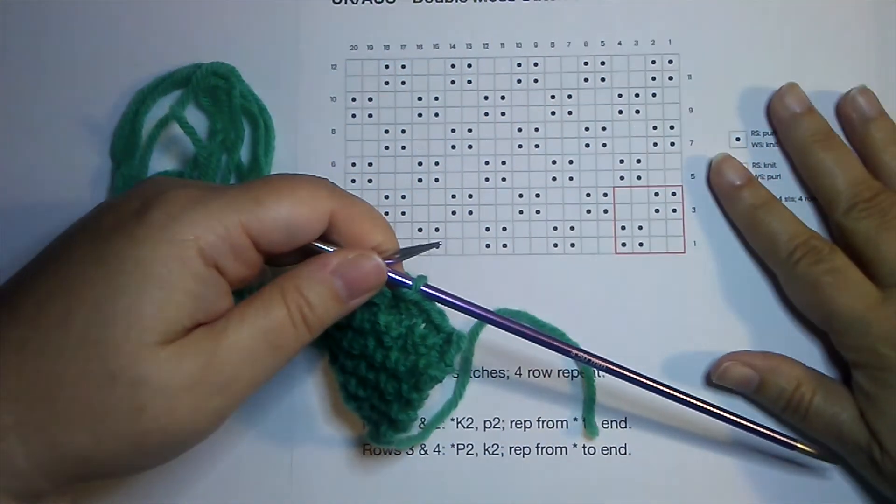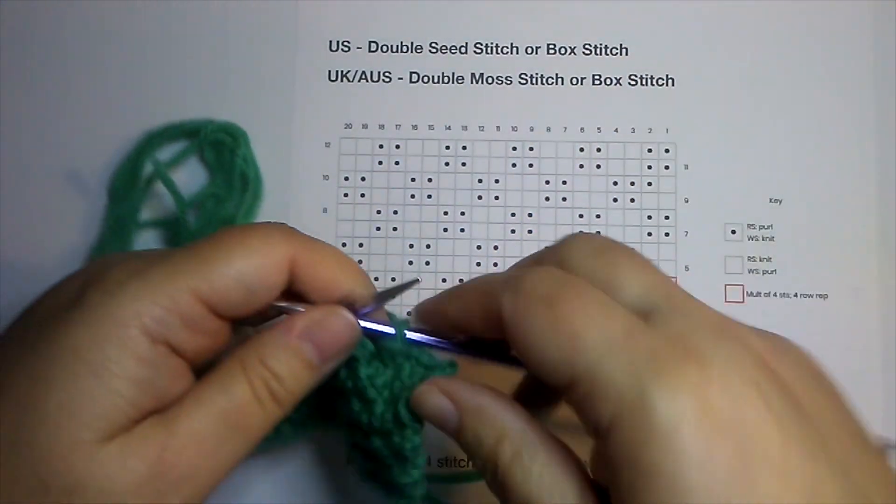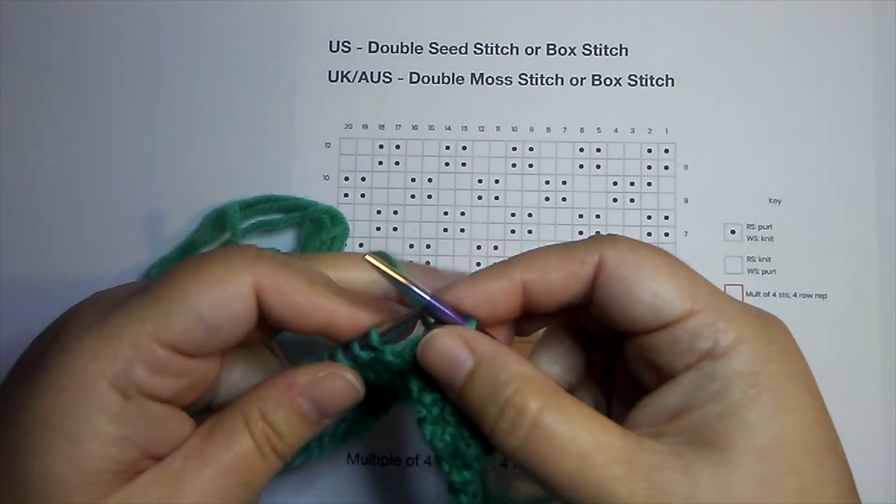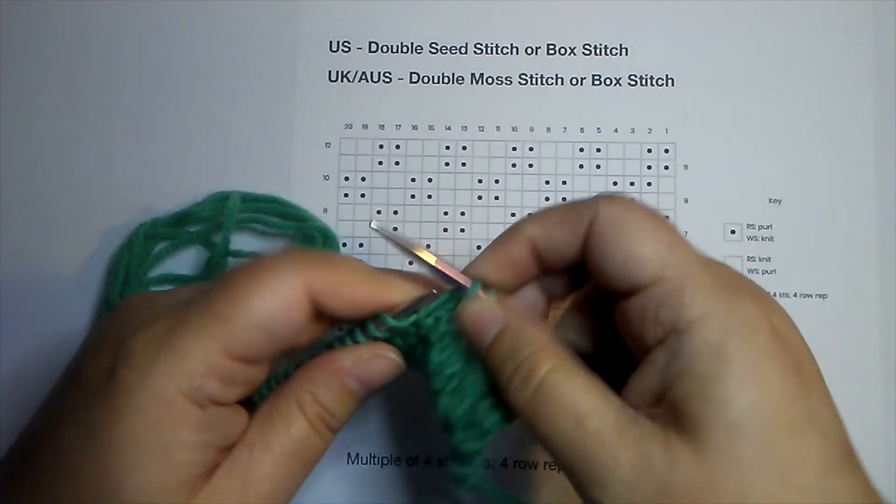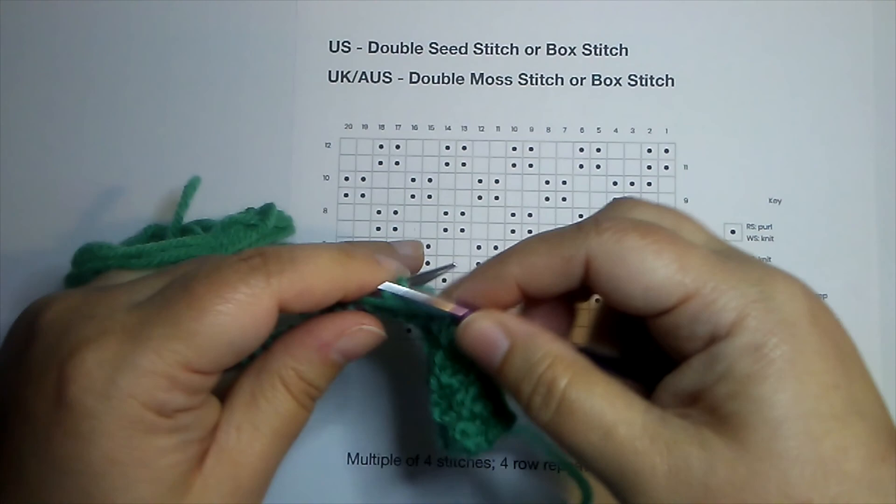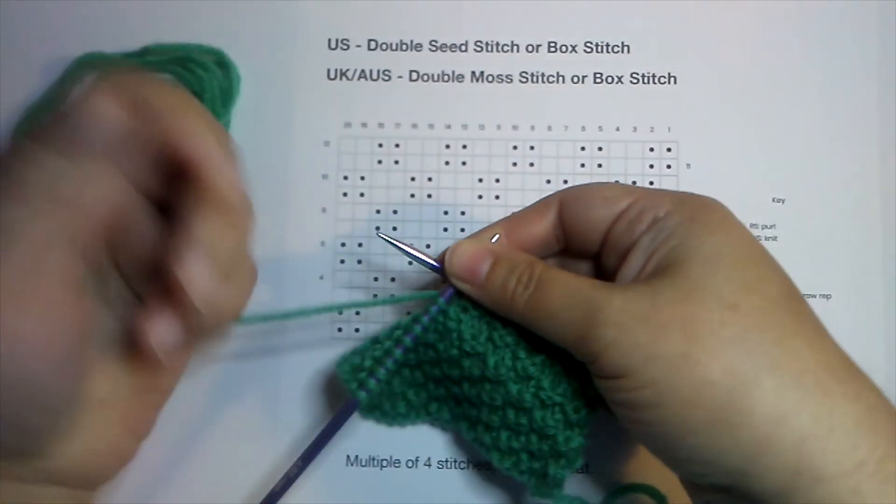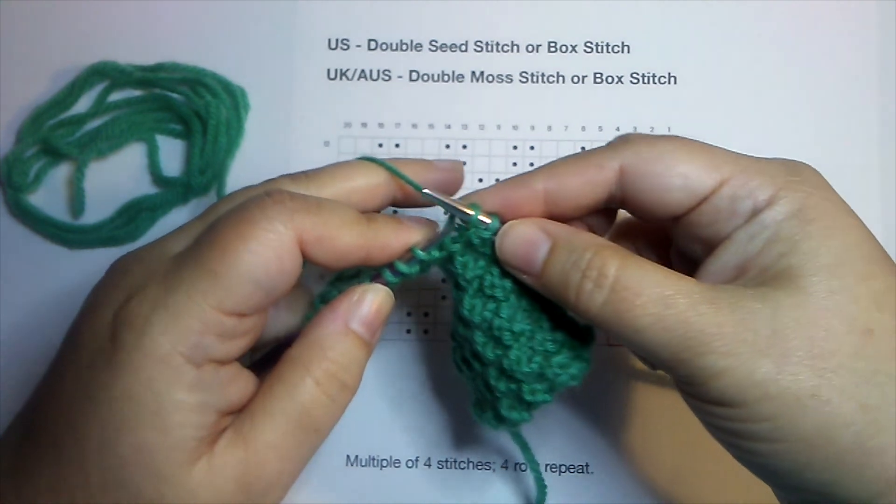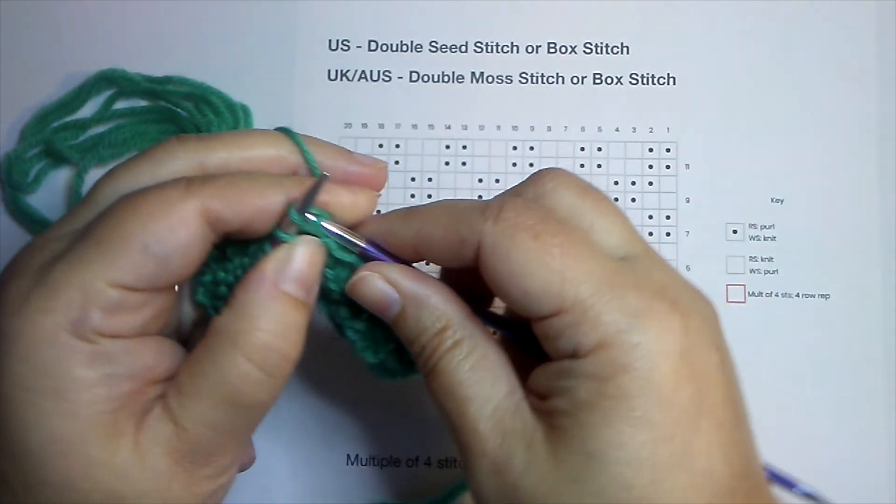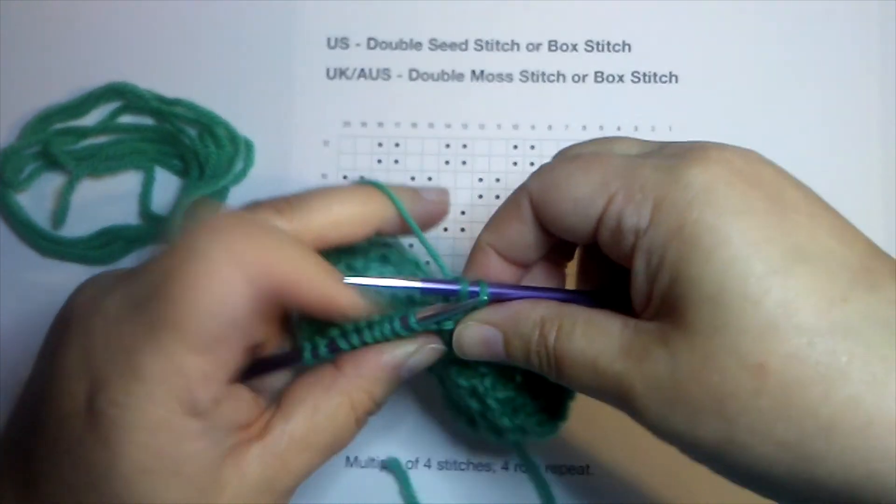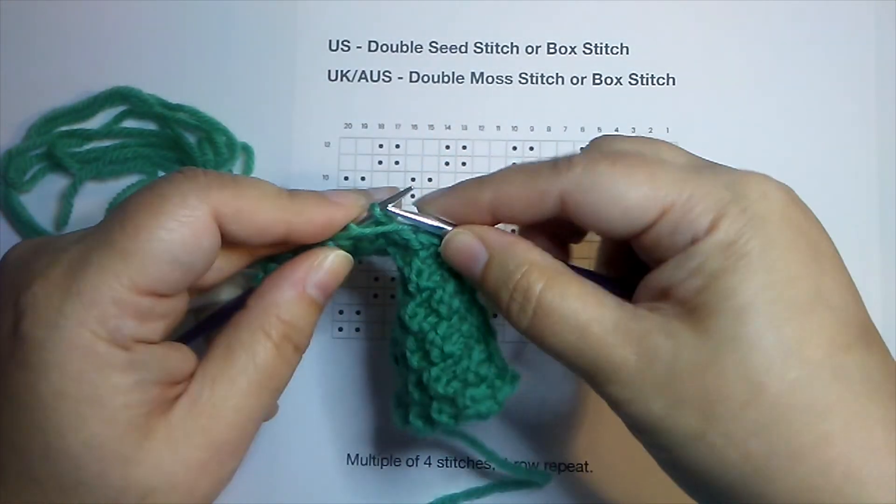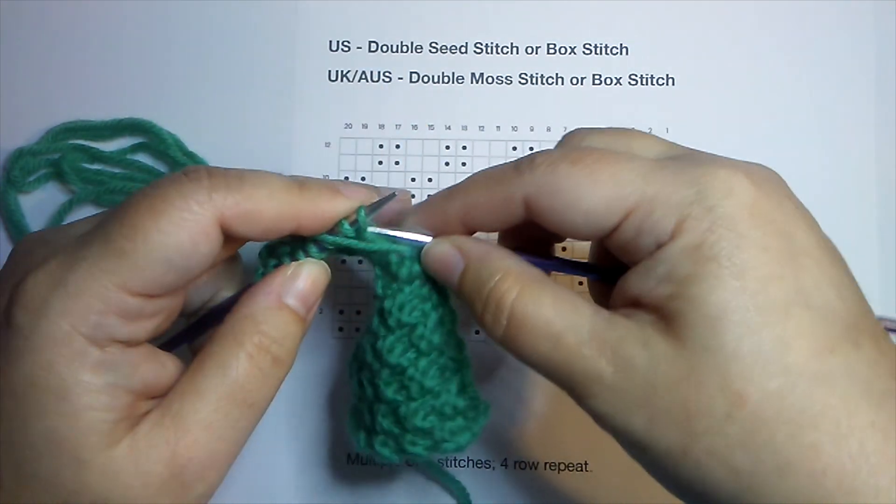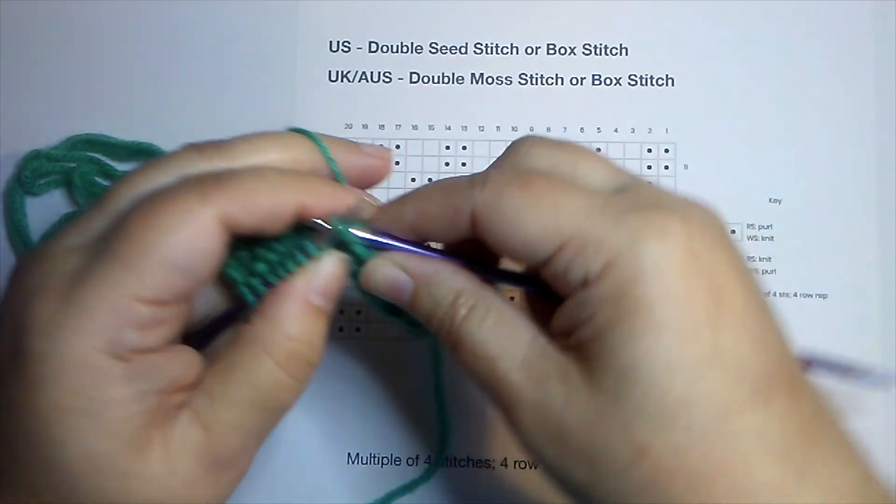Now as I said at the beginning, this stitch pattern, as you can see here, has many different names. So it's important to, if you're following a specific pattern, to look at their chart or the written instructions and ensure that you're using the same stitch pattern they call for. I have another video that explains the difference between this pattern and seed stitch and moss stitch. So be sure to click and watch that if you're curious to understand the differences between those three patterns. I think I counted eight different names for three stitch patterns, so it can be a bit confusing.